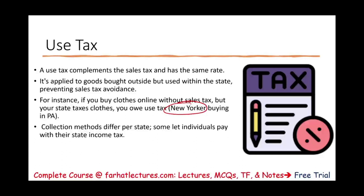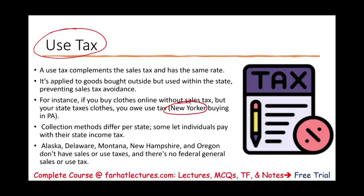Collection methods for use tax differ per state — some let individuals pay with their state income tax return. In Pennsylvania, they send you a use tax form that you must fill out. Alaska, Delaware, and Montana don't have any sales or use tax. There is no federal sales or use tax. If you live in Delaware, you pay no sales tax and no state income tax.